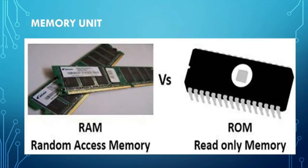Memory Unit. This unit is also called as main memory or primary memory. This unit helps in storing information during processing. To store data, this unit has many storage locations, each one identified by a unique number known as address. It also stores intermediate results which are used for further processing. The primary memory is of two types namely RAM and ROM.